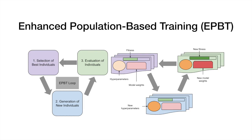This poster introduces enhanced population-based training, or ePBT, a novel extension of population-based training for online and evolutionary meta-learning. In ePBT, the training and hyperparameter optimization are interleaved. ePBT is applied to evolve loss functions which are parameterized as Taylor expansions.